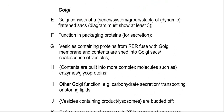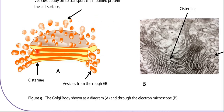Next is the Golgi body. Structure-wise, it consists of a series or stack of flattened sacs. If you draw a diagram, you must show at least three of these. You can see here there are four flattened sacs, which can also be called cisternae. You also get vesicles that come from the rough endoplasmic reticulum, and they fuse or join with each level of the flattened sacs.